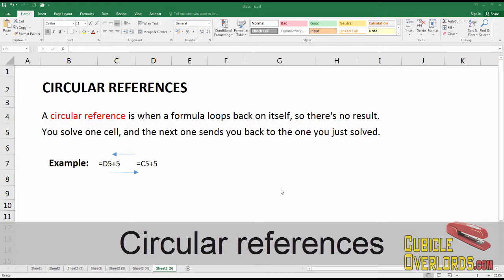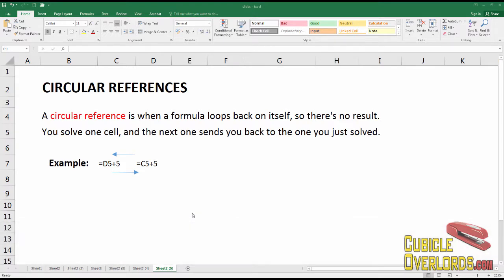Let's talk about circular references in Excel. A circular reference is when you have a formula on Excel that loops back on itself so there's no result. You generate one result and then the next cell takes that result and feeds it back into the same formula.